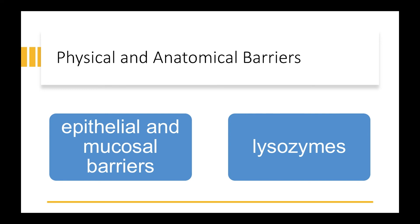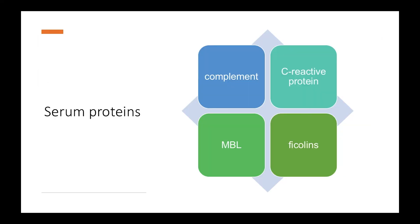Now, let's talk about serum proteins. Serum proteins include complement proteins, C-reactive proteins, MBL, and ficolins. The complement proteins form the complement system, which we will talk about a bit later. C-reactive proteins are normally pattern recognition receptors, also termed as PRRs, and they bind to phosphocholine on bacterial surfaces. The binding of phosphocholine on bacterial surfaces causes apoptosis and leads to the activation of the complement system.